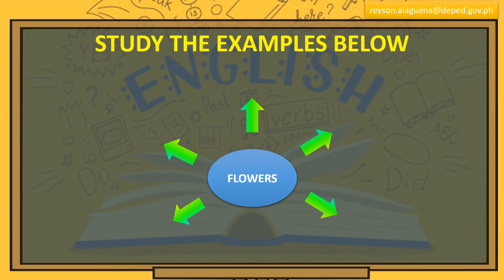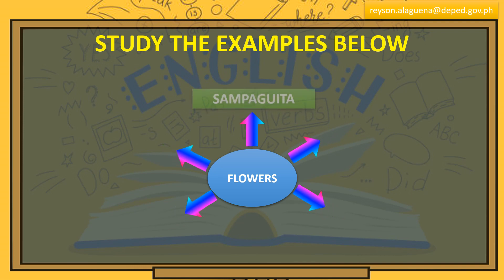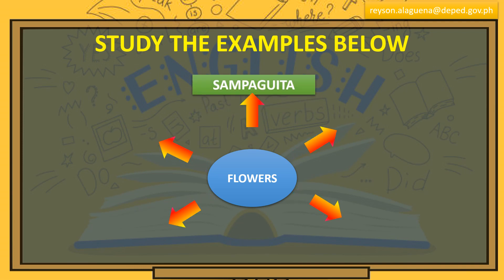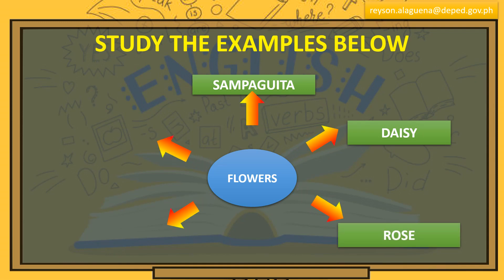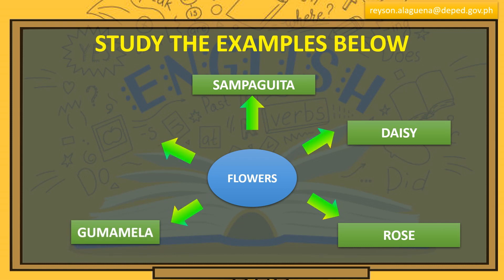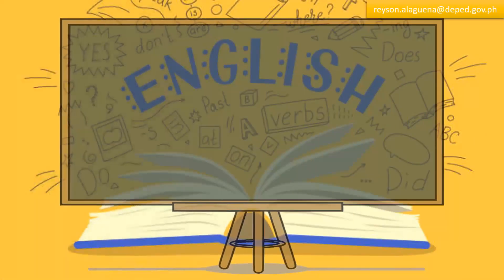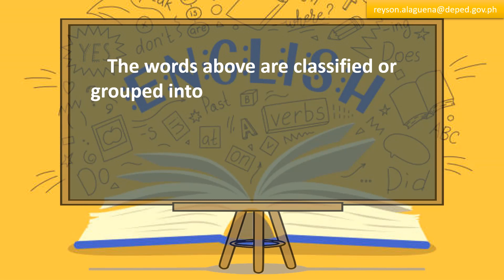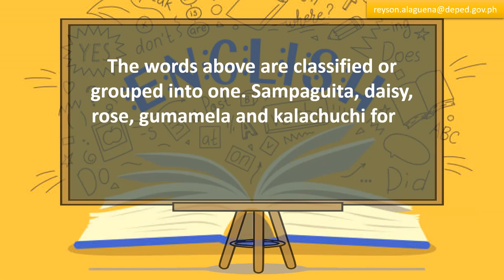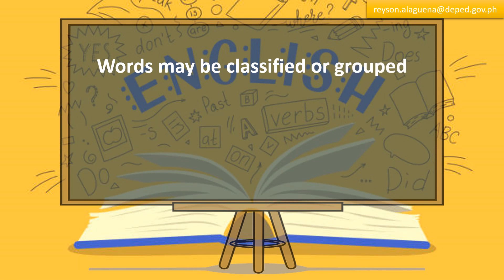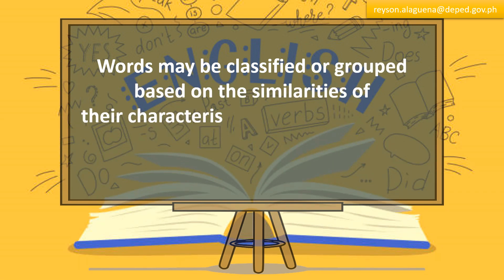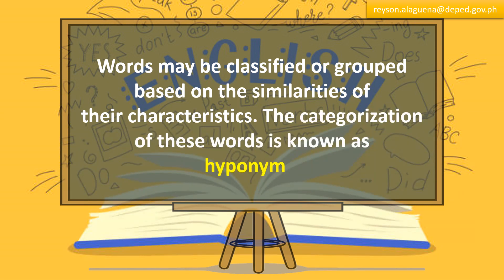Study the examples below. The words above are classified or grouped into one. Sampaguita, daisy, rose, gumamela, and kalachuchi form one group or classification. They are all categorized as flowers. Words may be classified or grouped based on the similarities of their characteristics. The categorization of these words is known as hyphonemes.